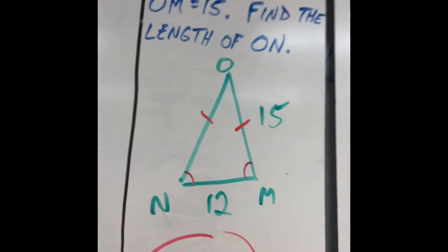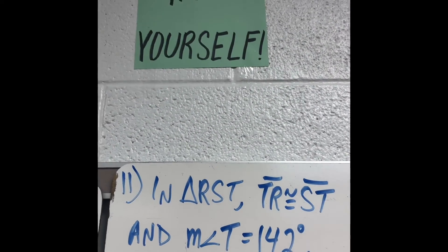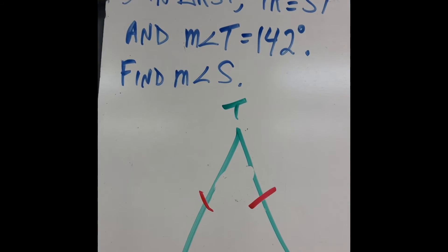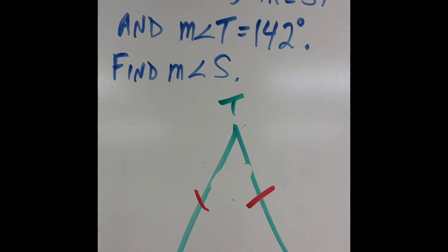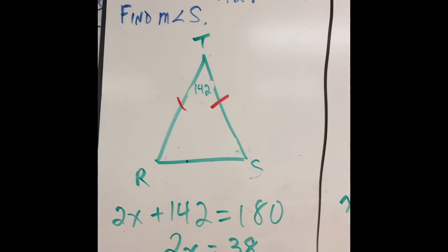Draw a picture. Draw a picture. Triangle R, S, T. TR equals ST. Draw it. You got to draw it. Angle T is 142. Okay, 142. All right, I'm continuing now.